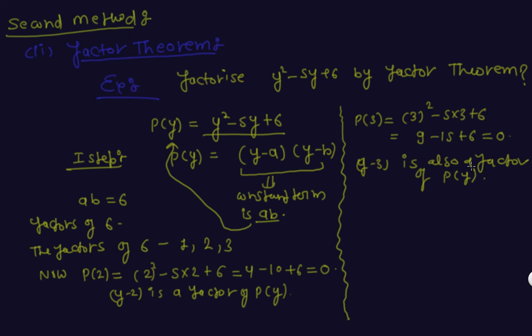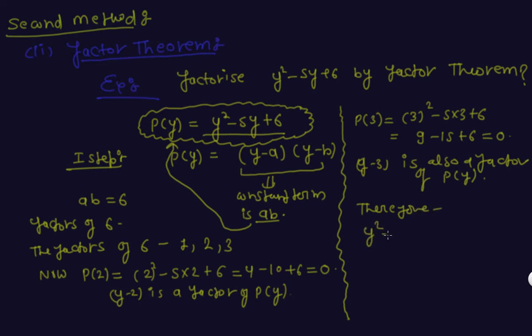So we get two factors of p(y). Since this polynomial is quadratic with degree 2, we can only get two factors. Therefore, y² − 5y + 6 = (y − 2)(y − 3). This is your answer and this is the second method to factorize a quadratic polynomial, called the factor theorem.